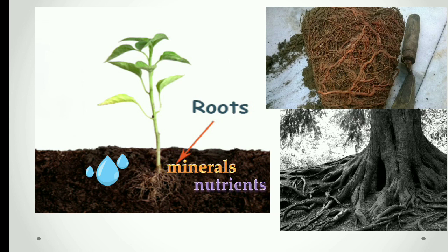What is the importance of roots? We have different parts or organs in our body, and these parts have different functions. For example, we can see with our eyes, we can hear with our ears, and with our tongue we can taste. In the same way, different plant parts have different functions. The function of the roots is they absorb water, minerals, and nutrients from the soil and transfer it to the plant or stem.